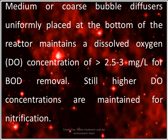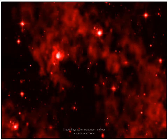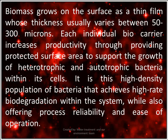Medium or coarse bubble diffusers uniformly placed at the bottom of the reactor maintain a dissolved oxygen concentration greater than 2.5 to 3 ppm for BOD removal. Still higher DO concentrations are maintained for nitrification. Biomass grows on the surface as a thin film whose thickness usually varies between 300 to 500 microns.